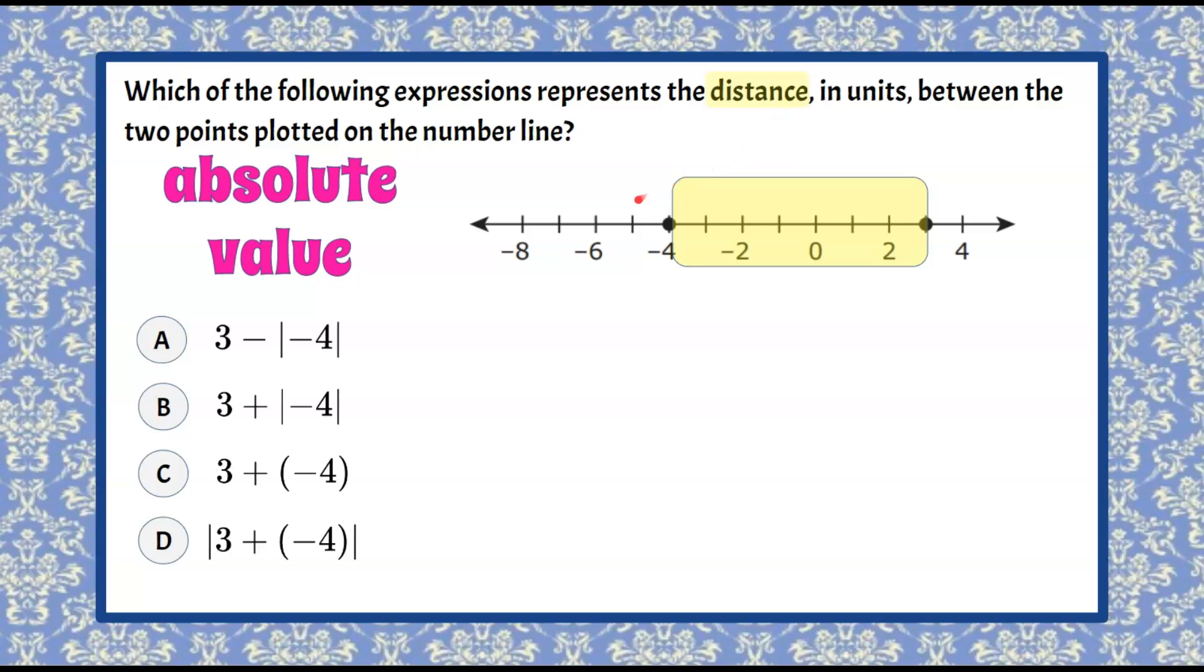So if you think about your distance that you live from home to school, let's say it's five miles. When you're at home you could say you're five miles away from school. When you get to school you're still five miles away from home. You never say I'm negative five miles away from home because you're at school versus at home. Distance is always positive.